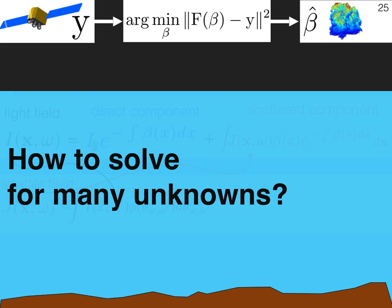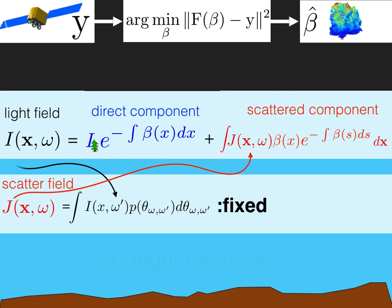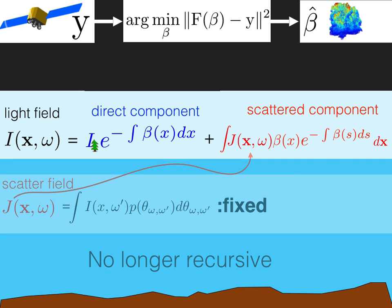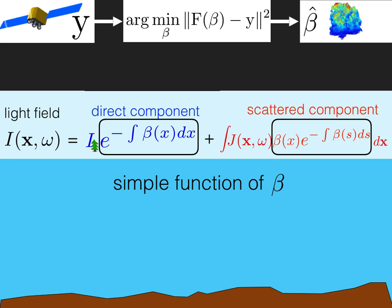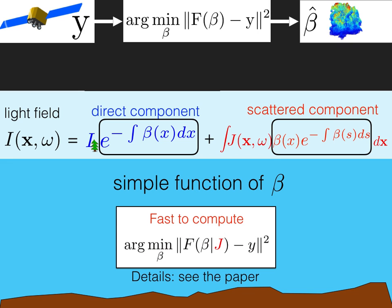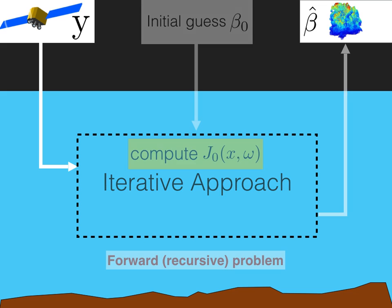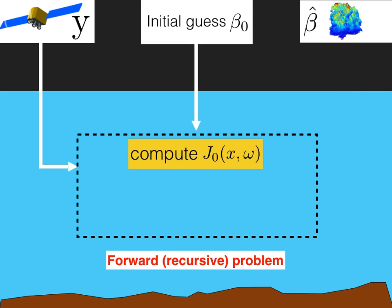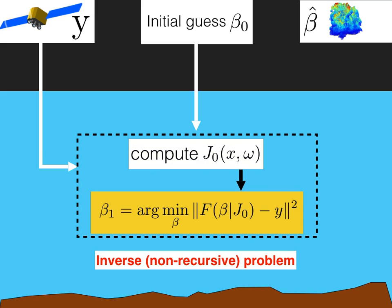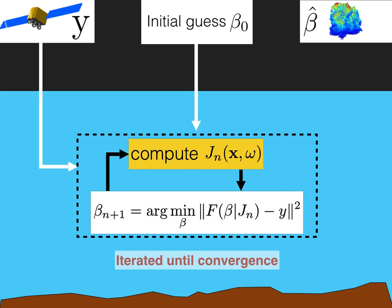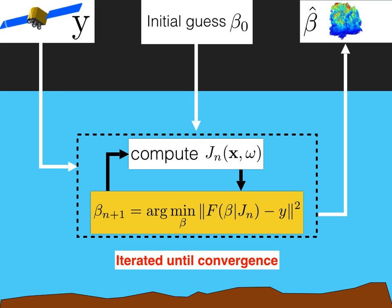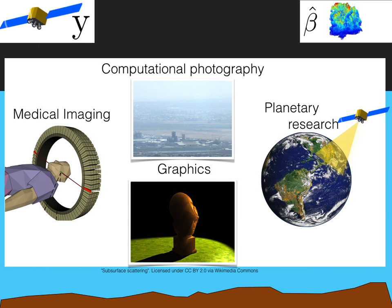So how do we solve this for many unknowns? If we look back at the image formation model, we can see that for a fixed j, this is no longer a recursive relation, but rather a simple function of beta, only through the exponential and multiplicative factors. This makes the minimization, given j, fast to compute. With this in mind, we devise the following iterative approach: we start with an initial guess beta_0 and compute j_0 by solving a forward recursive problem — this part is time consuming. With this fixed j_0, we update beta by solving an inverse non-recursive problem, which is very fast to compute. Using the newly estimated beta, we re-update j and iterate until convergence. Importantly, this approach is not atmospheric-specific and can be applied to any imaging setup where scattering media are considered.